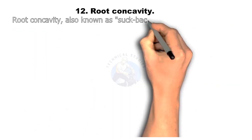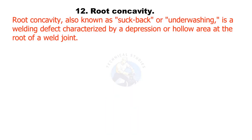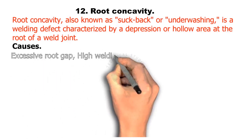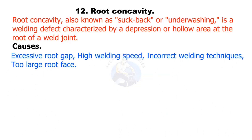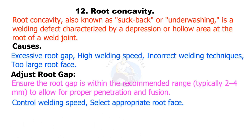Root concavity, also known as suck back or underwashing, is a welding defect characterized by a depression or hollow area at the root of a weld joint. Causes include excessive root gap, high welding speed, incorrect welding techniques, and too large a root face. Prevention: adjust the root gap to within the recommended range, typically 2 to 4 millimeters, to allow for proper penetration and fusion; control welding speed; and select an appropriate root face.